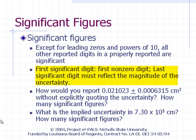For example, how would you report 0.021023 ± 0.0635 cubic centimeters without explicitly quoting the uncertainty? The first non-zero digit in the uncertainty is 6, in the fourth decimal place. Therefore, the value 0.021023 should be reported to the fourth decimal place. There should be three significant figures: the first significant figure is 2, the last significant digit is 0 in the fourth decimal place — so the significant digits are 2, 1, and 0. The leading zeros are not significant; their sole purpose is to locate the decimal point.